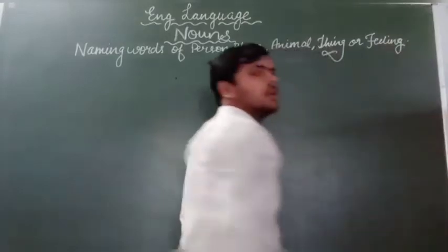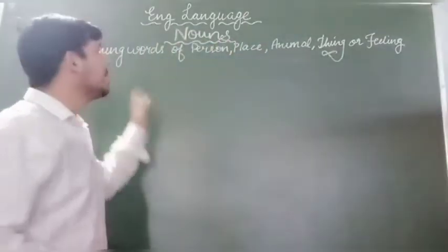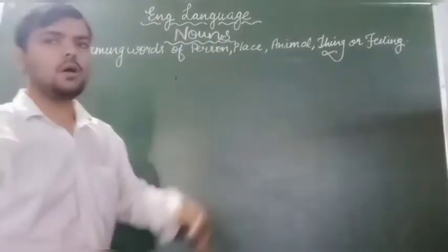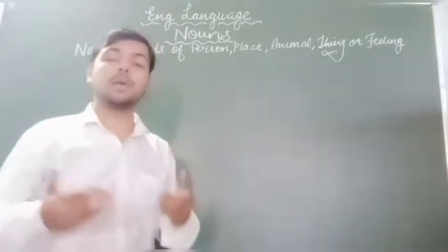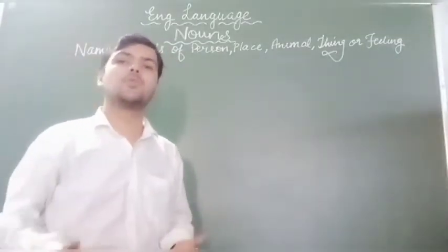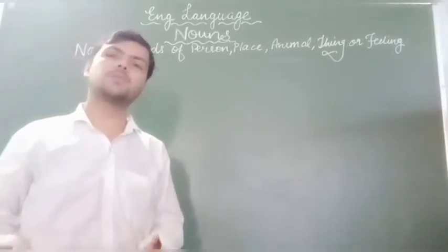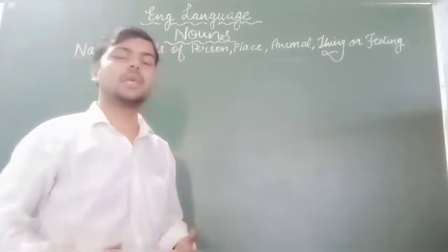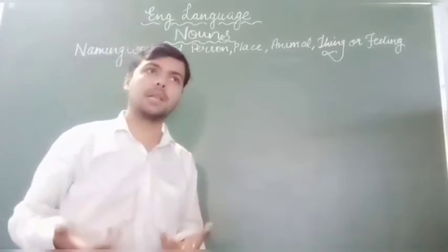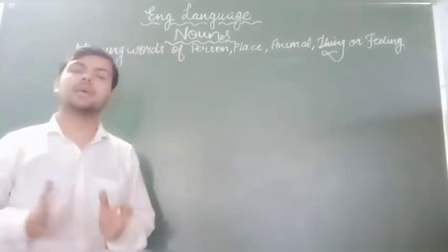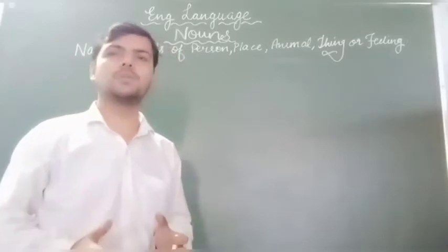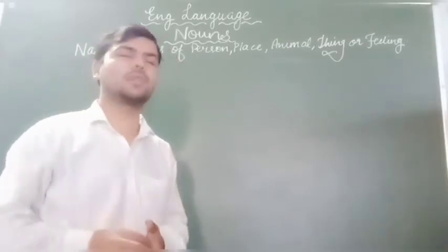Noun کیا ہوتا ہے — naming words of person, place, animal, thing or feeling. Noun جسے ہم ہندی میں سنگیا کہتے ہیں — یہ ایسے شبد ہیں جو کسی شخص، وستو، ستھان، بھاو یا کسی جانور کا نام بتا رہے ہوں — یہ nouns ہوتے ہیں۔ Noun کے five kinds ہوتے ہیں۔